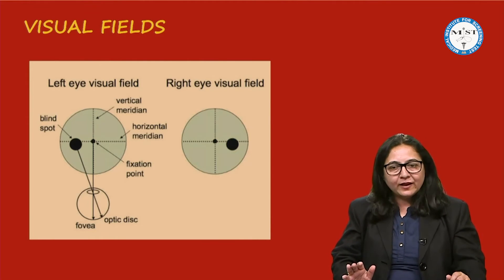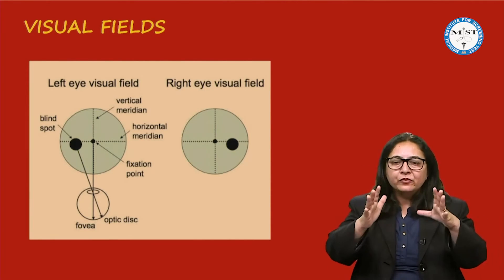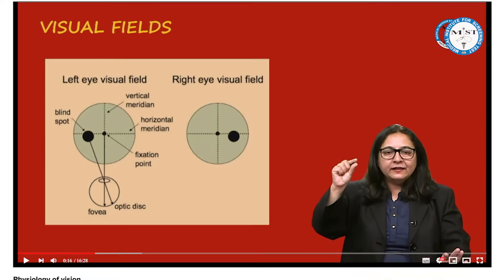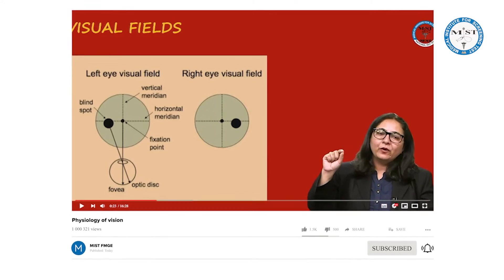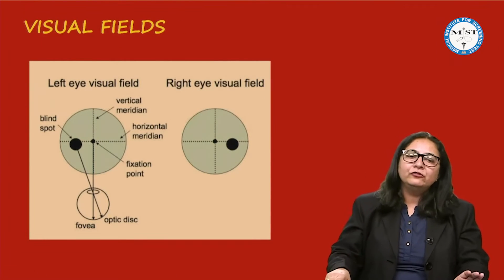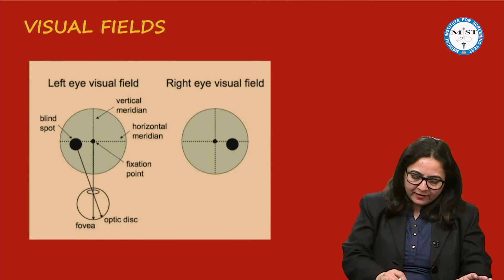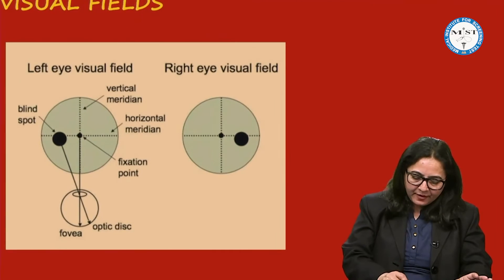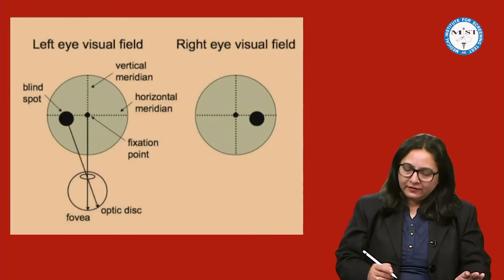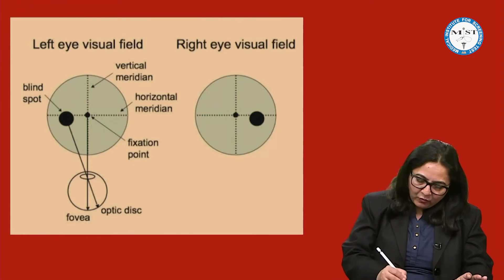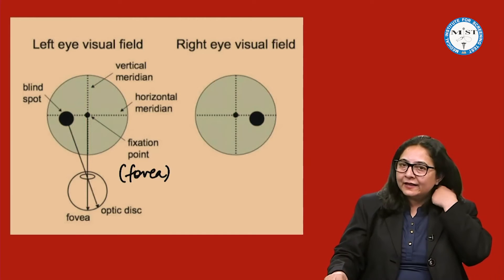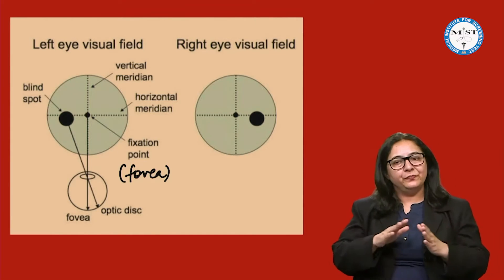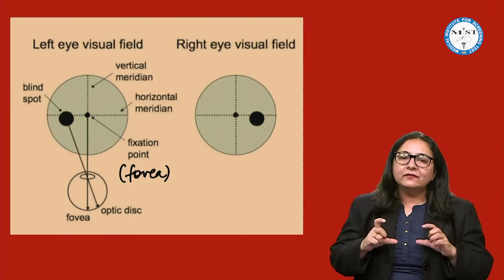One important thing when discussing or interpreting visual fields is that visual field is opposite to retina. In the retina, the fixation point is the fovea, so the central fixation point of the visual field is also the fovea. As you can see in this picture, the central point — which is the fovea of the retina — is also the fixation point in the visual field. In the retina, the optic nerve is nasal to the macula.